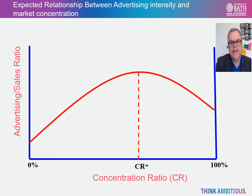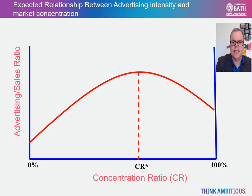We can sketch the expected relationship between advertising intensity and the degree of market concentration. As we can see in the diagram, this relationship is an inverted U shape. At low levels of market concentration, say in markets close to perfect competition where there are many firms each with a nominal portion of the market, advertising intensity is low. Here, firms will tend to use price as the competitive weapon. However, as markets become more concentrated, oligopolistic firms will seek to avoid price competition and instead use non-price variables such as advertising, and this is where advertising intensity tends to rise.